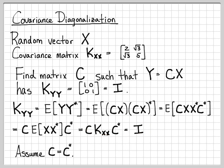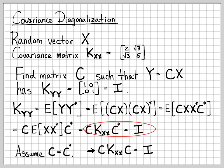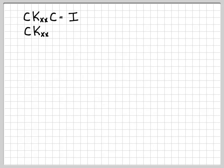There are different things we can choose for C. One thing that makes our life easier is to assume that C has complex conjugate symmetry — this still gives us a valid solution. With that assumption, the equation simplifies. If we then multiply both sides from the right by C inverse, the right side becomes C inverse, giving us a cleaner relationship.